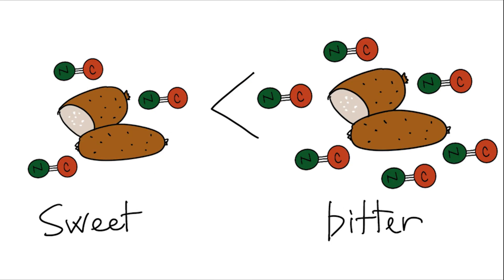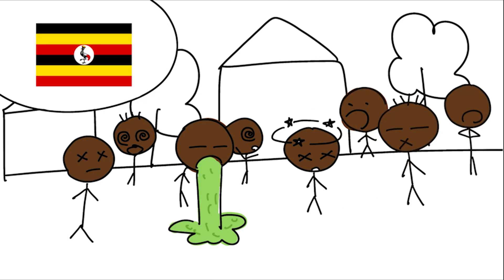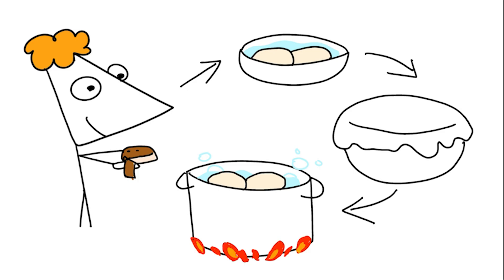Bitter cassava contains more cyanide than sweet cassava. In Uganda, hundreds of people were poisoned after eating inadequately processed cassava flour. To remove the toxin, cassava must be peeled, soaked, fermented, and thoroughly cooked.